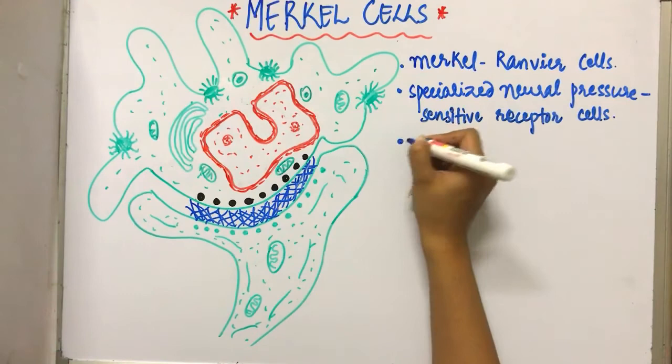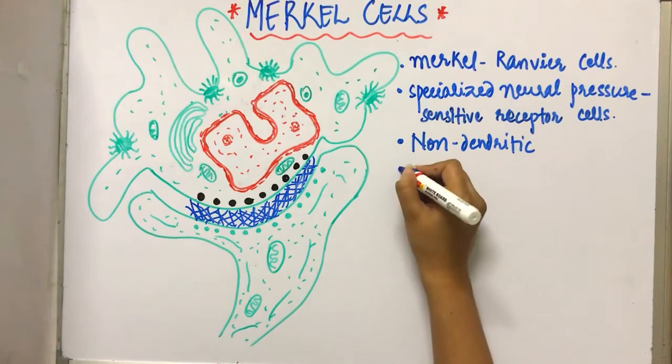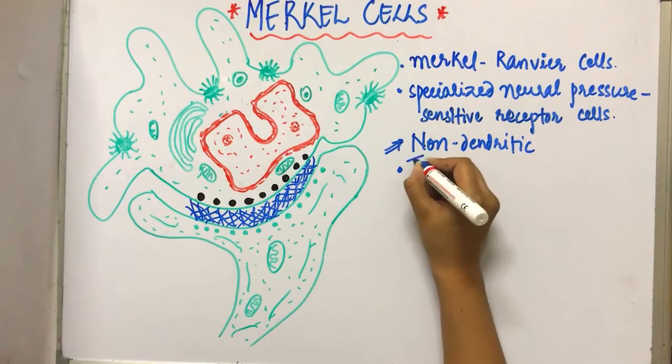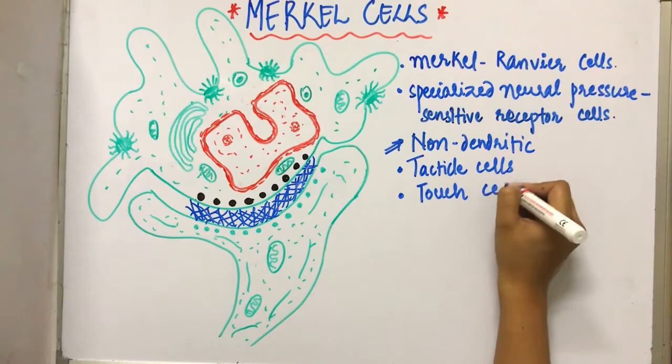The melanocytes and the Langerhans cells, both of them were the dendritic cells. So these are the non-dendritic, non-keratinocyte cells. Next, these are tactile cells. With tactile comes touch, so these are the touch cells.